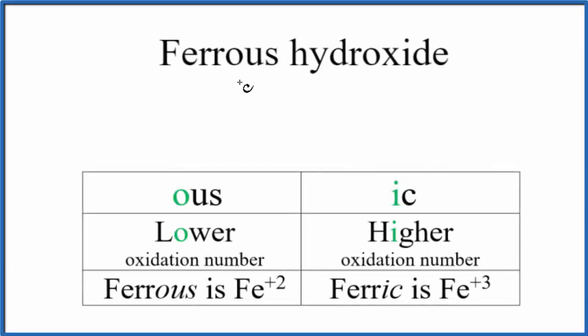In this video we'll write the formula for ferrous hydroxide. Ferrous hydroxide, that's naming with the older naming system, sometimes called the common naming system. Today we would call this iron 2 hydroxide.